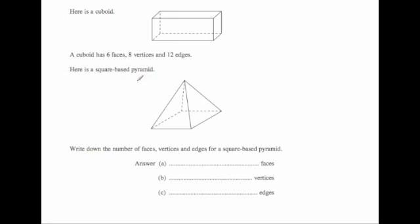Here's a square base pyramid. Write down the number of faces — so let's look at this square base pyramid and count the faces. A square base pyramid has a square on the bottom, so that's one. It then has one, two, three, four triangles, so altogether that would be five faces. Let's count the vertices. There's a vertex at the top, and there are four on the bottom, so altogether there'd be five vertices.